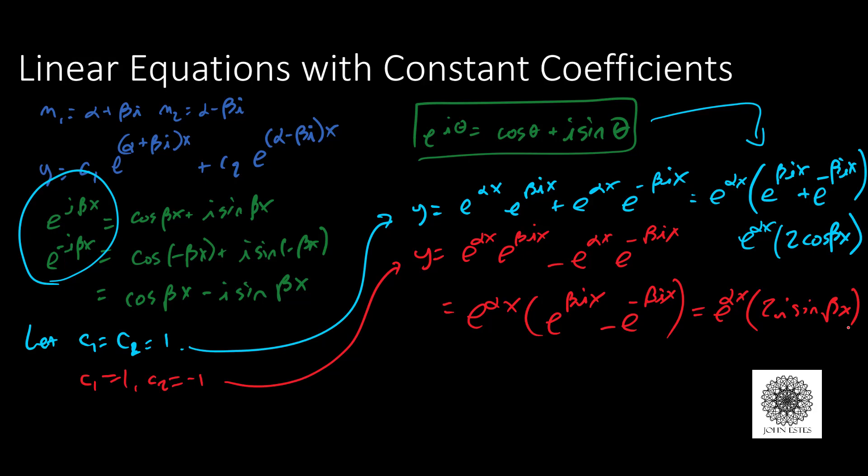Now I have new solutions: e to the alpha x times 2 cosine beta x and e to the alpha x times 2i sine beta x. Those are linearly independent solutions. I can rewrite my new general solution to be y equals, let's take out an e to the alpha x since there's an e to the alpha x times everything, c1 cosine beta x plus c2 sine beta x.